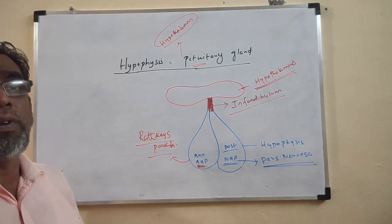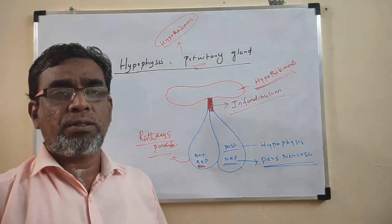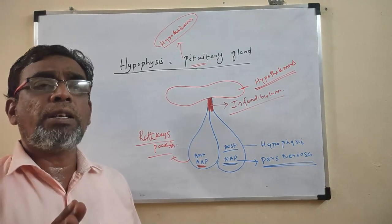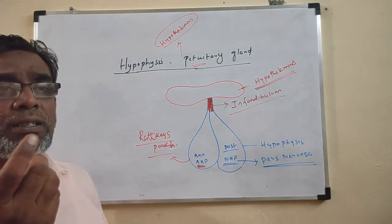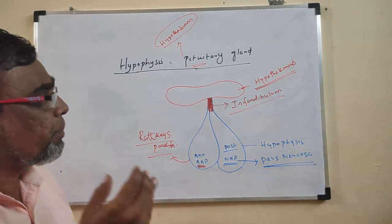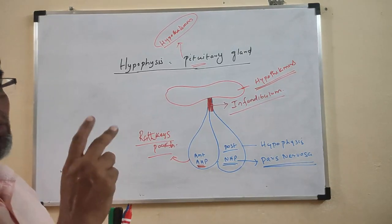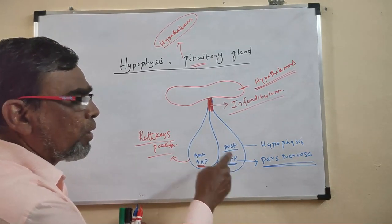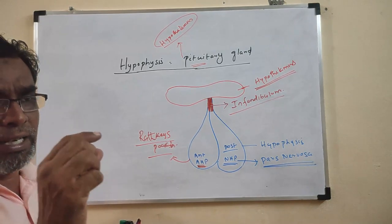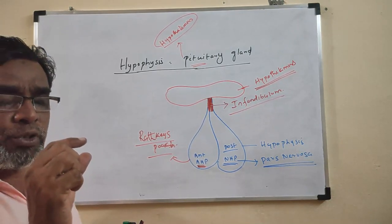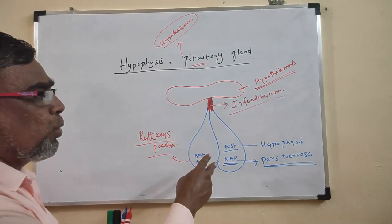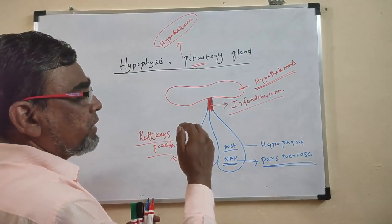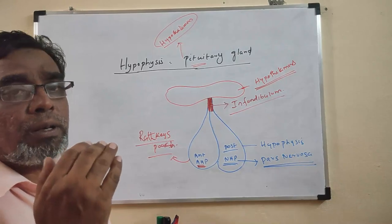So far we have discussed what hypophysis is: it is called the master of all glands, located in the sella turcica of the sphenoid bone. It has two lobes — the anterior lobe (adenohypophysis) and the posterior lobe (neurohypophysis). Its size is one centimeter and weight is 0.5 grams. These two lobes are attached to the hypothalamus via the infundibulum.